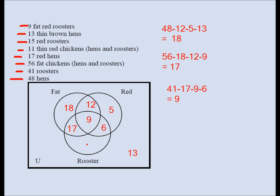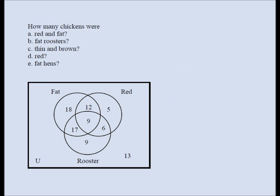Now the Venn diagram is complete. All eight regions are filled: 18 (fat brown hens), 12 (fat red hens), 5 (thin red hens), 9 (fat red roosters), 6 (thin red roosters), 9 (thin brown roosters), 17 (fat brown roosters), and 13 (thin brown hens). We can now answer the questions.